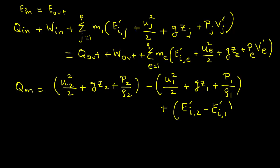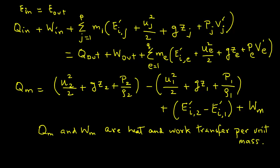So note that in this case, QM and WM are heat and work transfer per unit mass, and also note that we have replaced specific volume by the density, that's why we have P2 over rho 2, and P1 over rho 1.